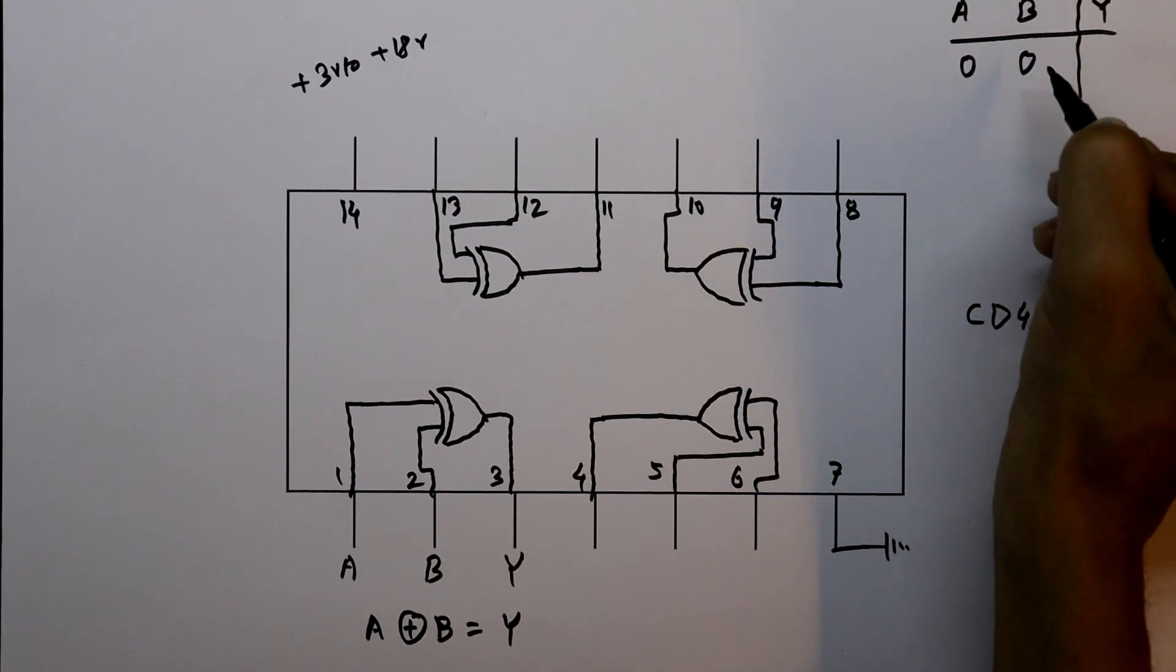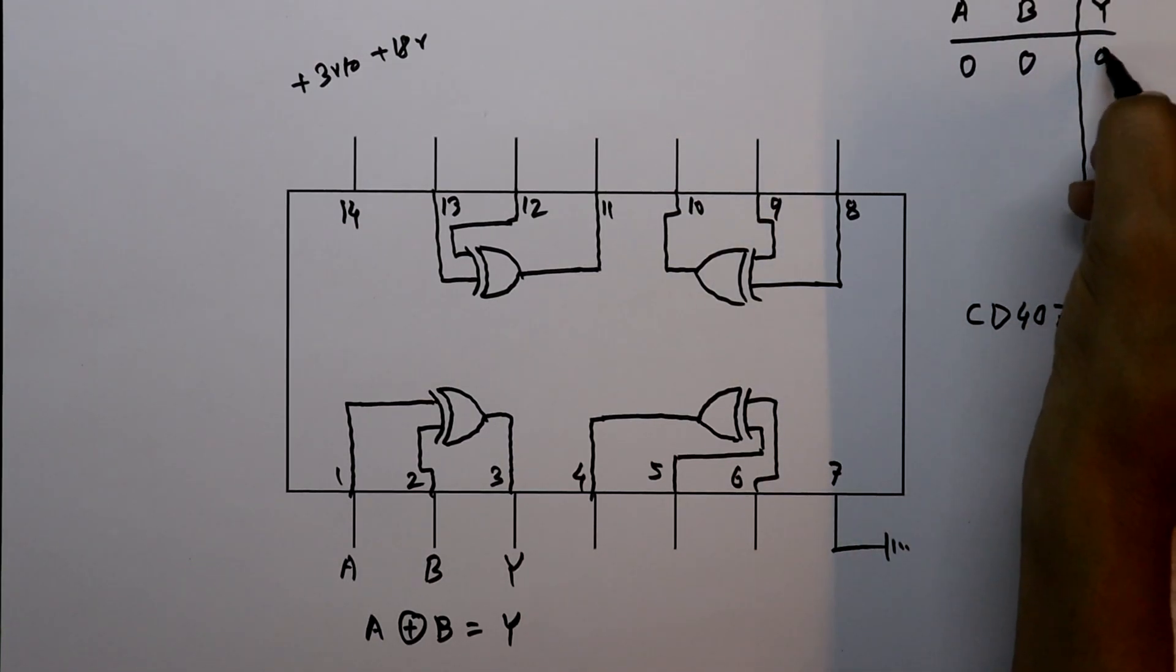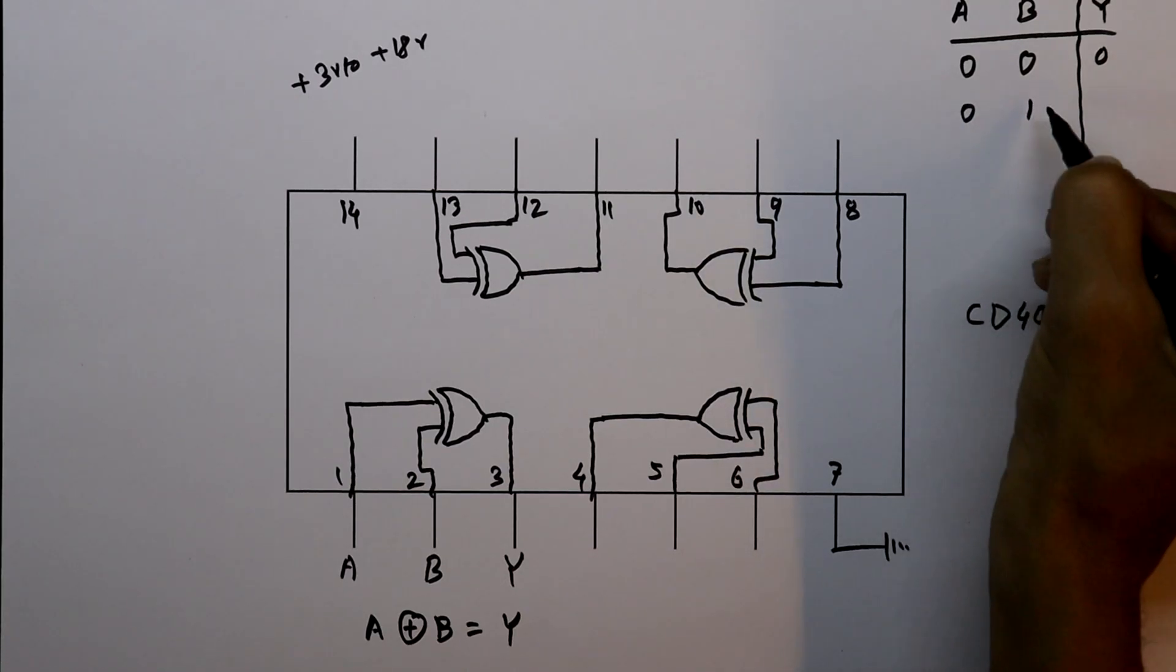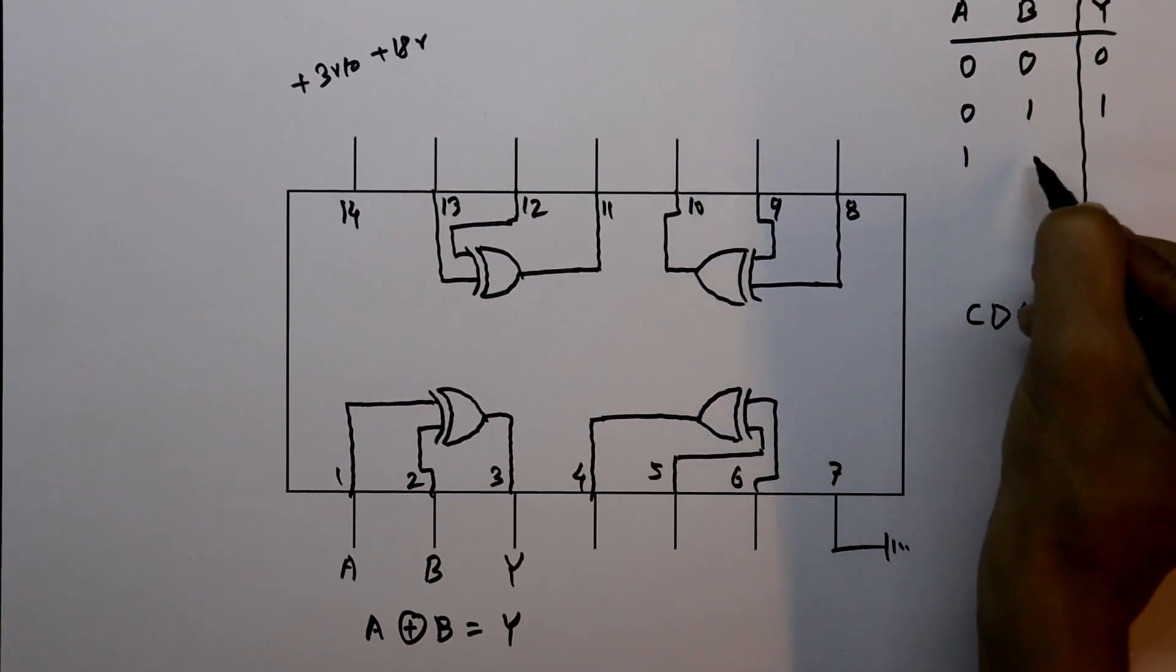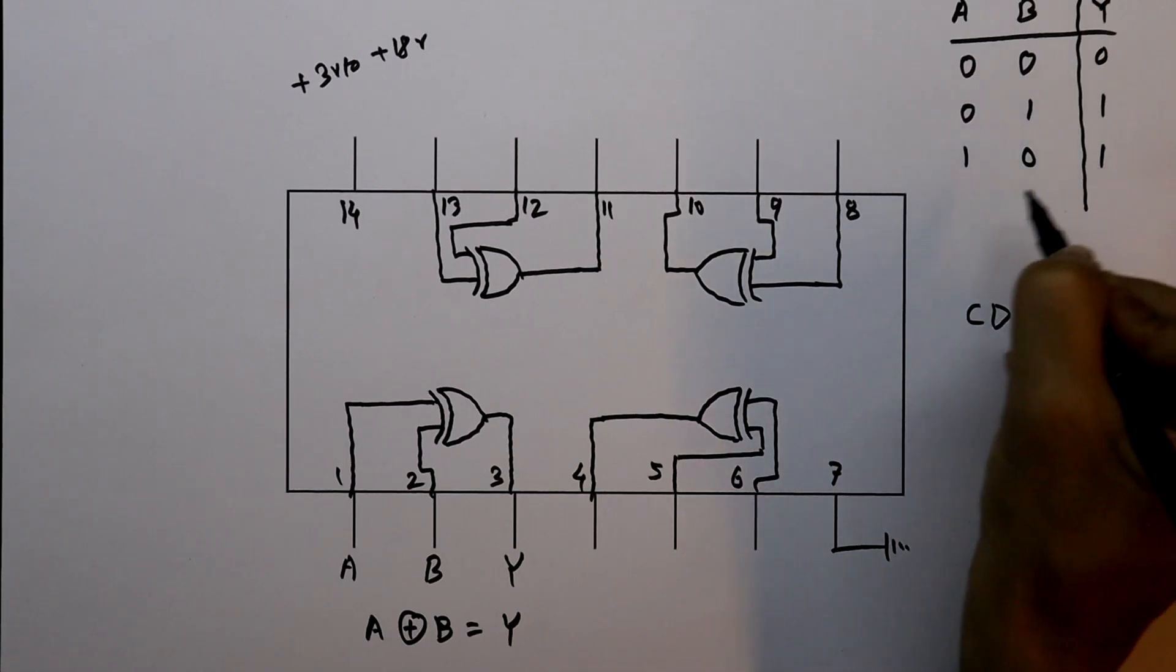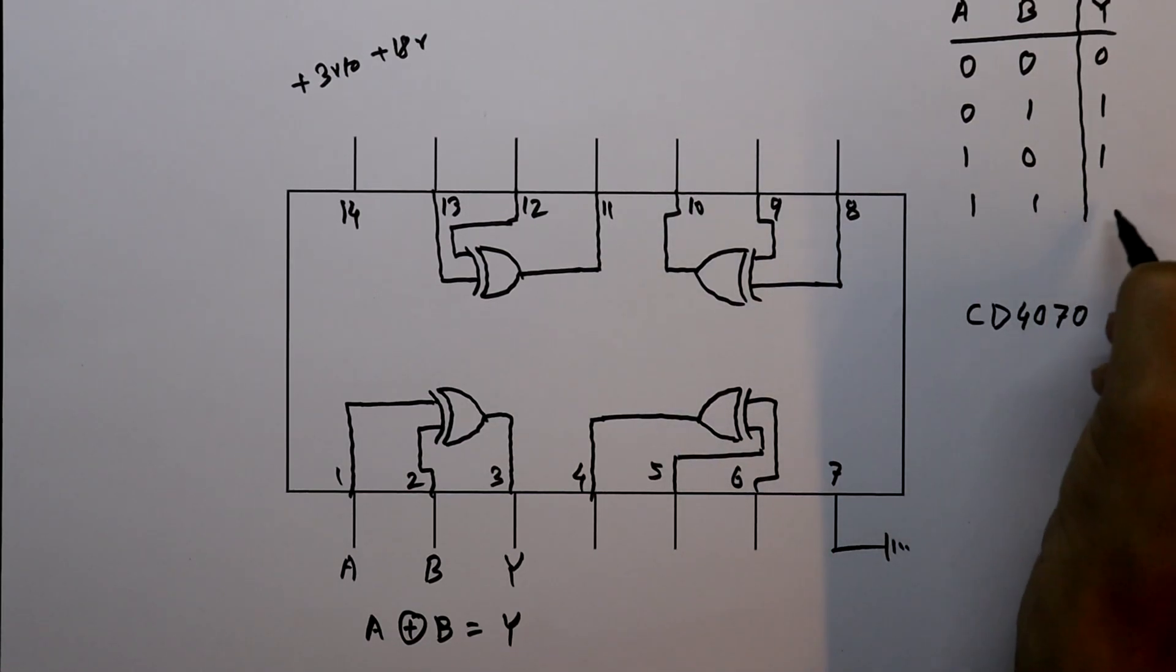Whenever A and B are 0, then we will get 0. A 0 B 1, we will get 1. A 1 B 0, we will get 1. A and B are 1, then we will get 0.